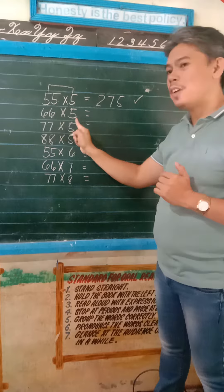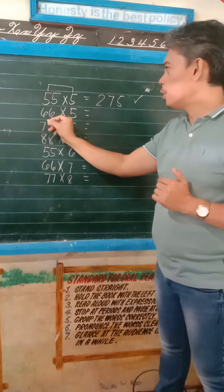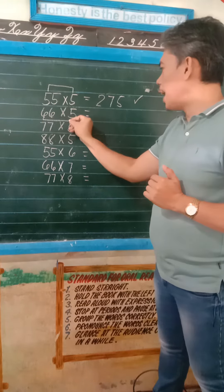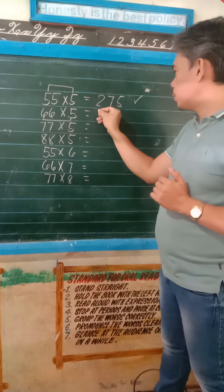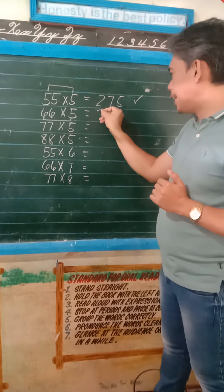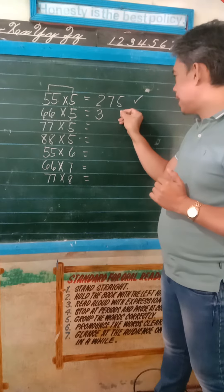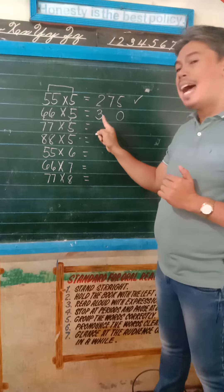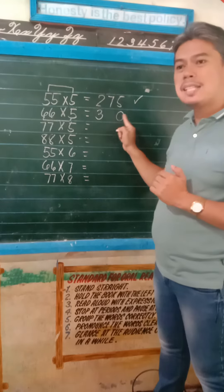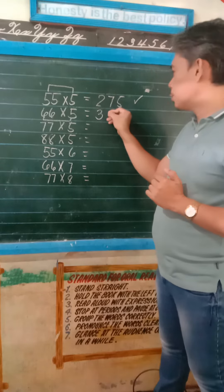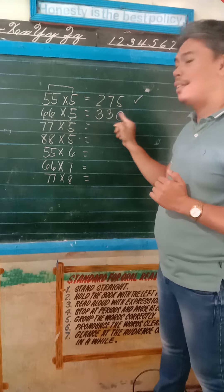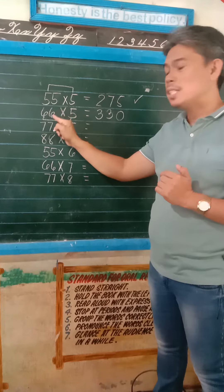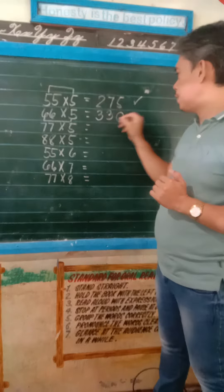66 times 5. Multiply 6 and 5. So 6 times 5 is equal to 30. Write 3, then give a space, then write 0. Then add 3 and 0: 3 plus 0 is equal to 3. Write 3 between 3 and 0. So 330 is the product of 66 and 5.